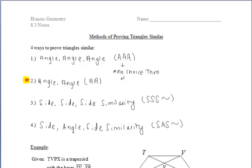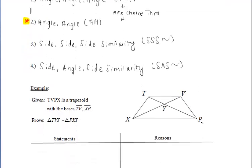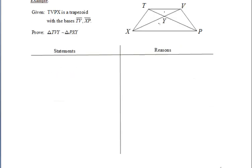Now as I mentioned before, angle-angle is what we'll be using a lot in our two-column proofs. The side-side-side and side-angle-side similarities, we will use in more application-like problems as you'll see in your books.